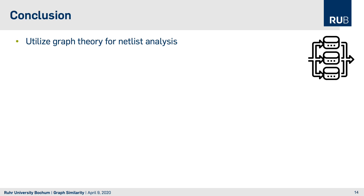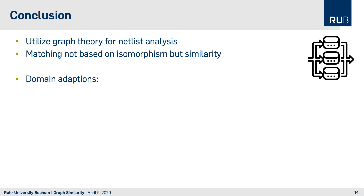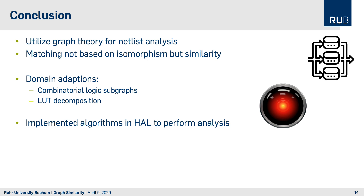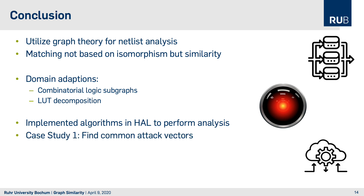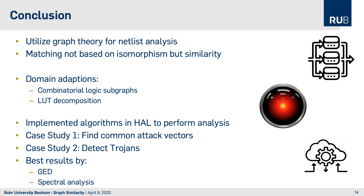In conclusion, we showed how to utilize graph theory for netlist analysis, using matching based on similarity rather than isomorphism. For domain adaptation of the netlist, we identified all combinatorial logic subgraphs and composed the LUTs into basic logical gates to normalize the netlist. We implemented our algorithm in HAL and showed in our first case study that we can find common attack vectors like S-boxes in a design, and in our second case study that we can detect trojans. The best results were achieved via graph edit distance and spectral analysis.